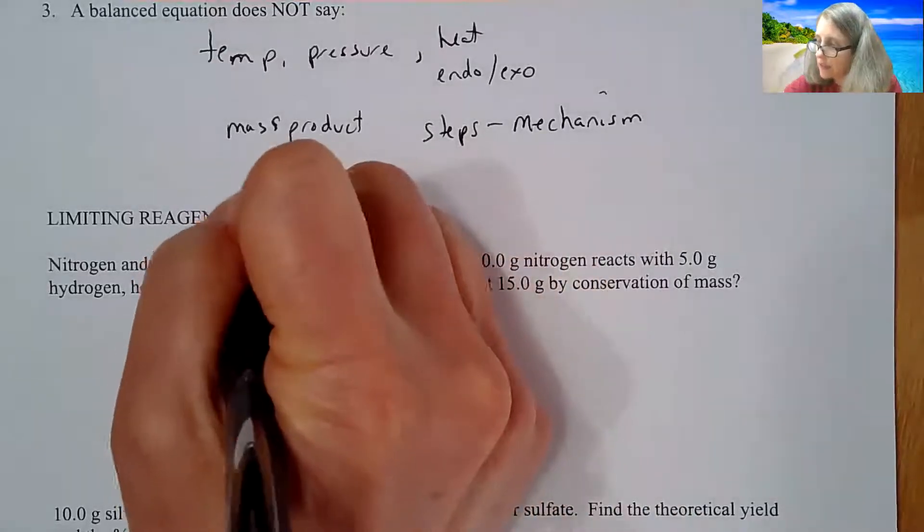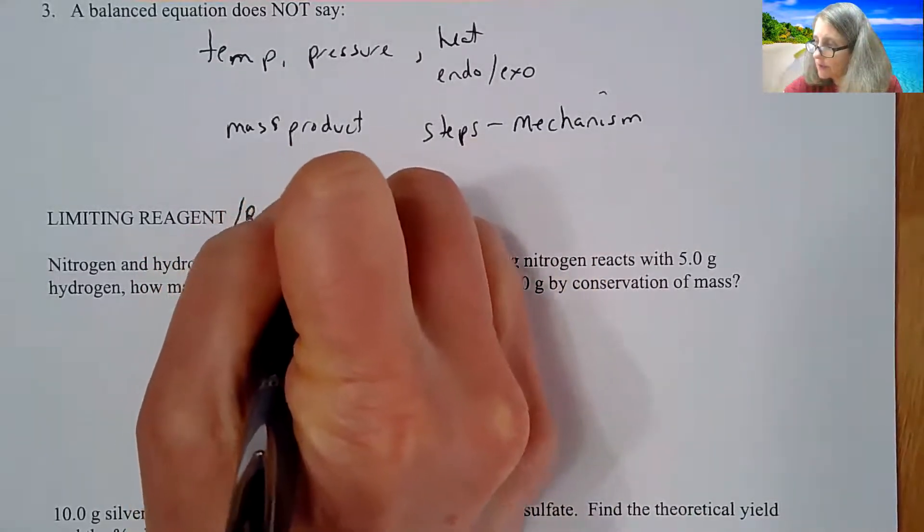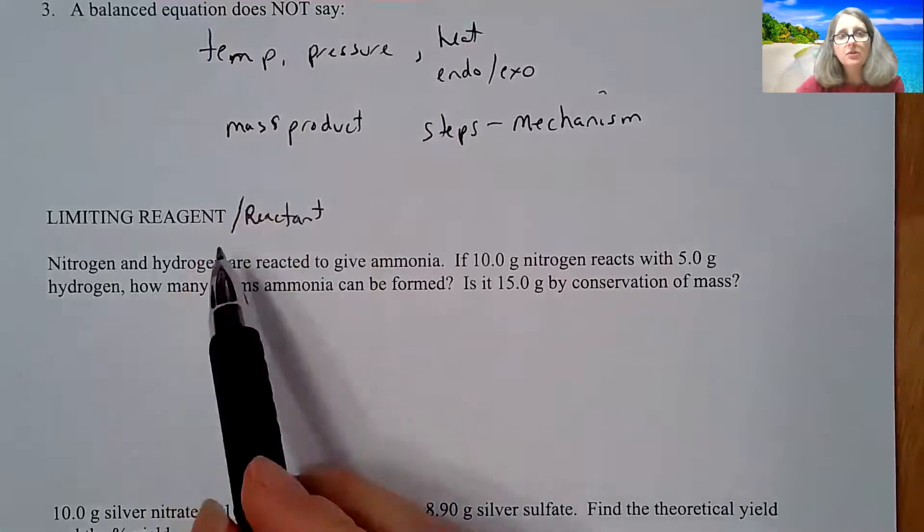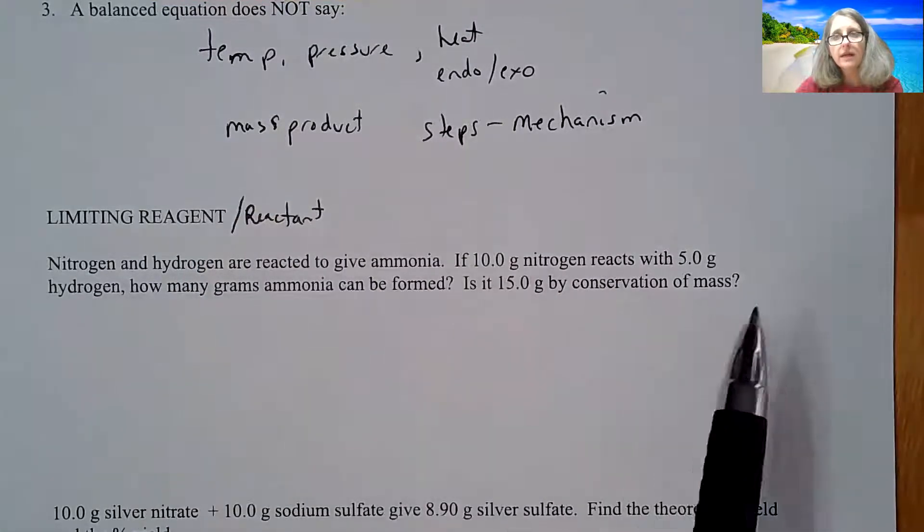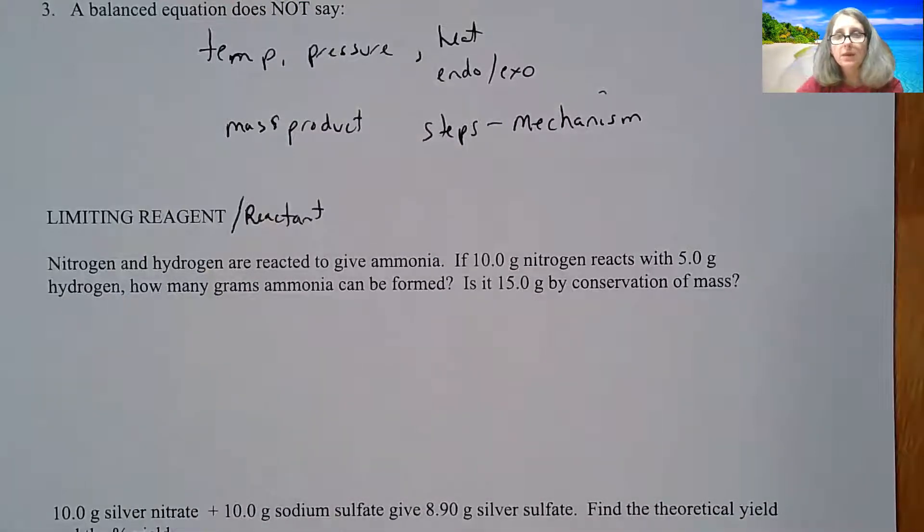So one of the problems that we did with stoichiometry is what we call limiting reagent or limiting reactant type problems. I'm going to show you again how to do these problems. With all of these processes, I don't care how you set up the problem. I just care that you do the problem and you get the correct answer.